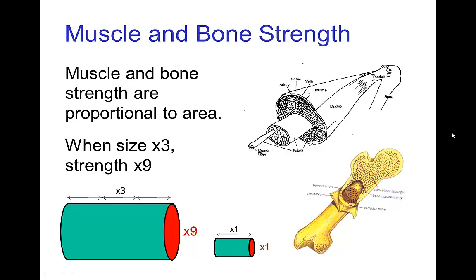Muscle and bone strength are proportional to area. As size increases, the muscle volume increases, but the strength of a muscle doesn't depend on its volume — it depends on its cross-sectional area, because that gives you the number of muscle fibers. A similar result holds for bone strength, or in fact for the strength of materials in general. When we increase the size by a factor of three, the area increases by a factor of nine.